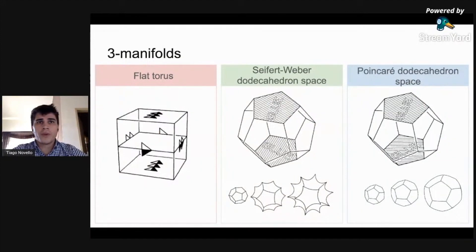In dimension three, there are five more model geometries. However, this work focuses on the classical. Probably the most famous example of compact 3-manifolds is the flat torus, which is obtained by gluing the opposite faces of the cube.